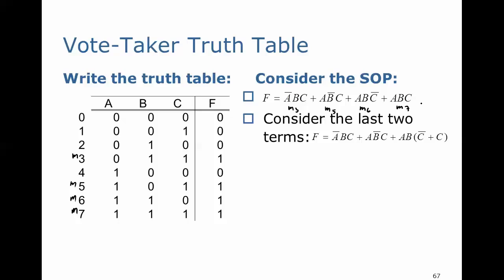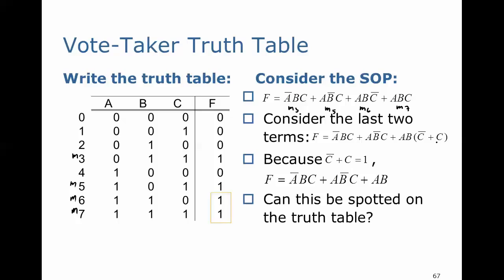Now let's consider the last two terms, M6 and M7. We see that they have A and B in common, so we can factor that out and we're left with C-bar plus C, which equals 1. So our function F can be reduced from the original sum of four terms. This can be spotted on the truth table: for those last two entries, only the C input is changing while A and B stay the same. Yet F is true for both. So the output is true regardless of C — it does not depend on C when A and B are true.